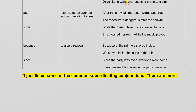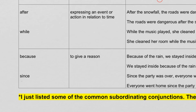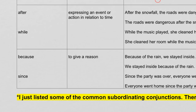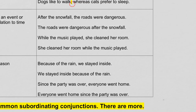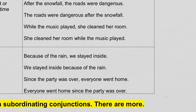Let's compare the subordinating conjunctions 'after' and 'while,' used to express an event or action in relation to time. 'After the snowfall, the roads were dangerous.' Or putting 'after' in the middle — no comma: 'The roads were dangerous after the snowfall.' Similarly, 'While the music played, she cleaned her room.' With 'while' in the middle — no comma: 'She cleaned her room while the music played.'